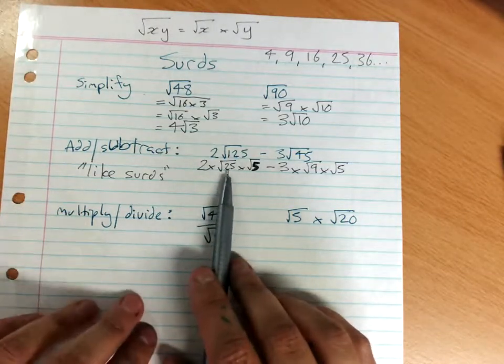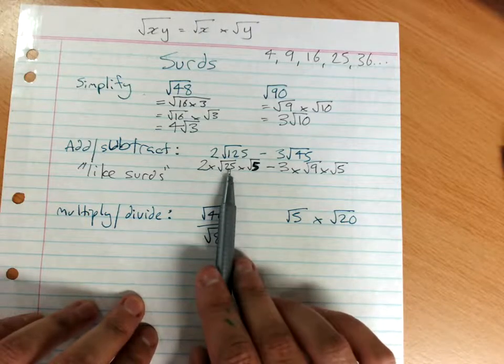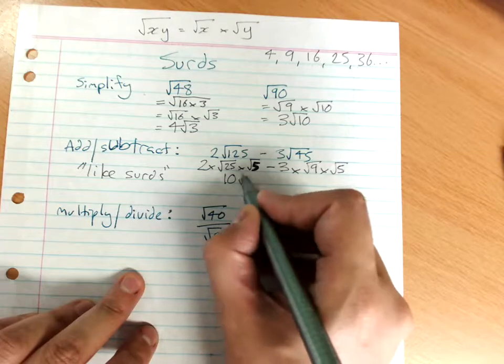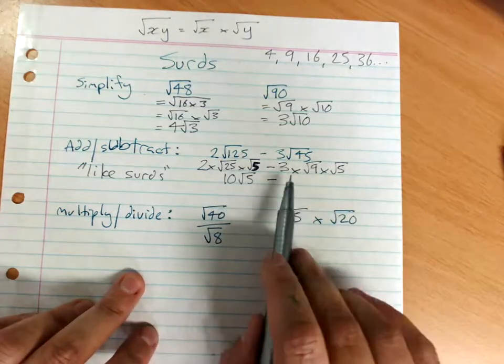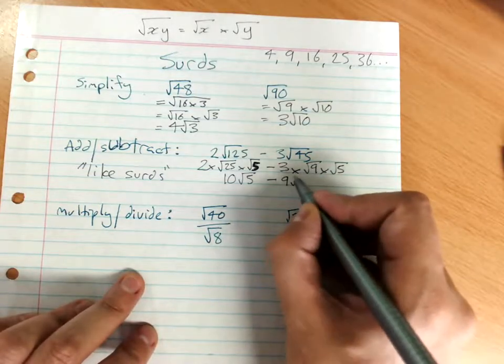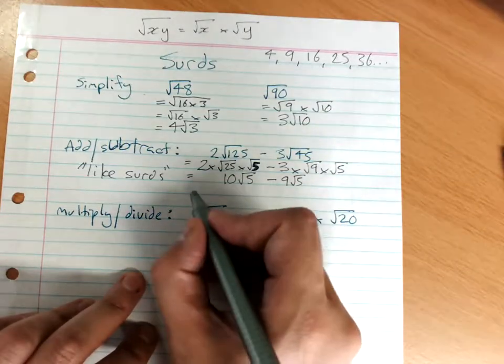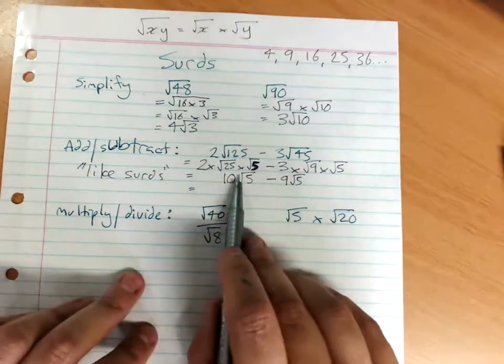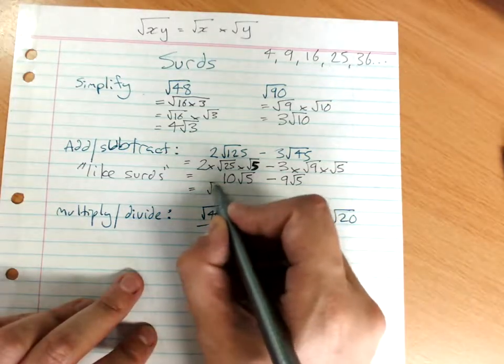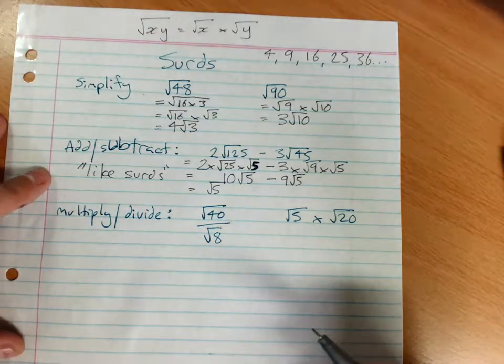So our square product factor, root of 25 is 5. So this is 2 times 5. I've got 10 root 5 minus, this root 9 is 3, so it's 3 times 3, 9 root 5. Don't forget my equals signs. 10 root 5 minus 9 root 5, same as algebra, just subtract your coefficients. That's just 1 root 5 or root 5. So you need like surds. It works the same way as algebra.